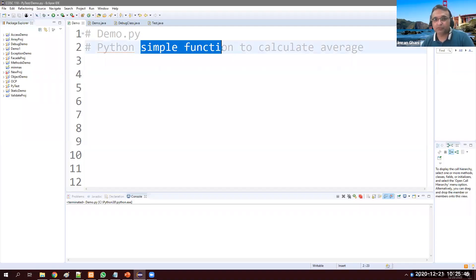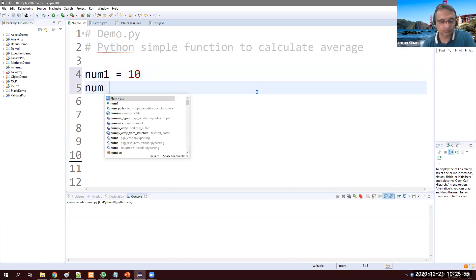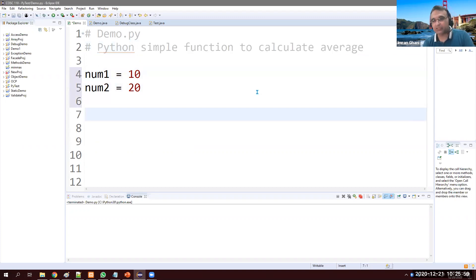Let's see a simple function to calculate average in Python. We have num1 which is 10 and num2 is 20. Now we want to have the average of this and we want to write a function for this.